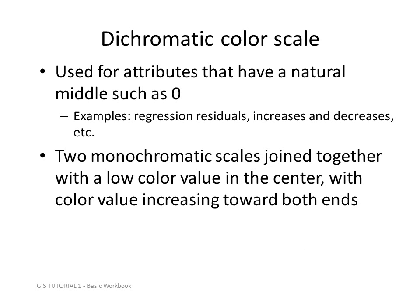A dichromatic color scale is used for attributes that have a natural middle, such as zero. Examples include regression residuals, increases and decreases in population. You might also use this for election results, where 50% effectively is your midpoint. It consists of two monochromatic scales joined together with a low color value in the center, with color value increasing towards both ends.